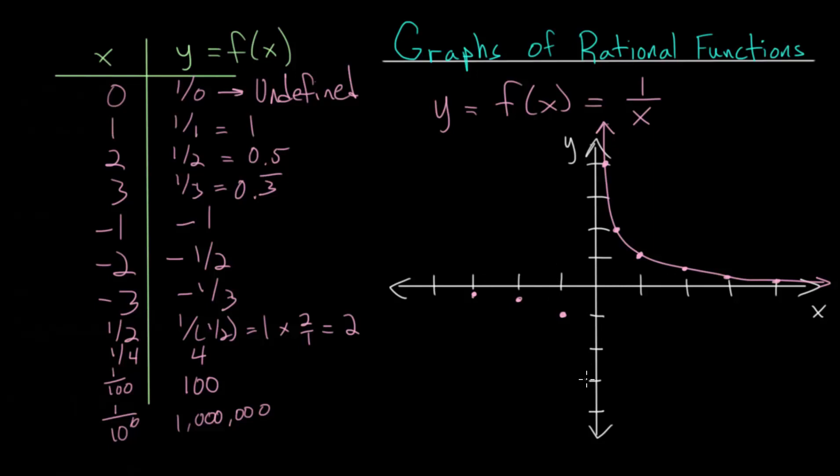The negative values are going to be very similar. For instance, if we put in minus 1 half, then we get 1 over negative 1 half. We know 1 over 1 half is just 2, and then we're just going to take the opposite of that. So that will be negative 2.